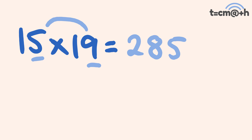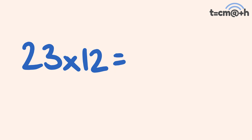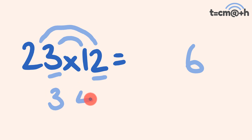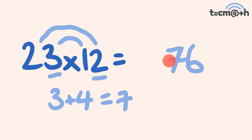Next, we'll look at multiplying bigger two-digit numbers. Let's start with 23 multiplied by 12. To get the units part, we multiply the units digits: 3 times 2 is equal to 6. For the tens part, we do rainbow multiplication: 3 times 1 equals 3, and 2 times 2 equals 4; 3 plus 4 is equal to 7. Finally, for the hundreds part, 2 times 1 is equal to 2. Our answer: 276.